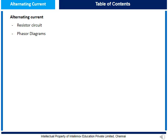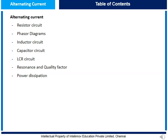Let us now study about alternating current. In this module, we would be covering important points about resistor circuit, how to draw phasor diagrams, inductor circuit, capacitor circuit, and important points in LCR circuit, followed by resonance and quality factor, power dissipation, and transformer formulas. At the end of this module, we will look at some of the questions which are important from an examination point of view.